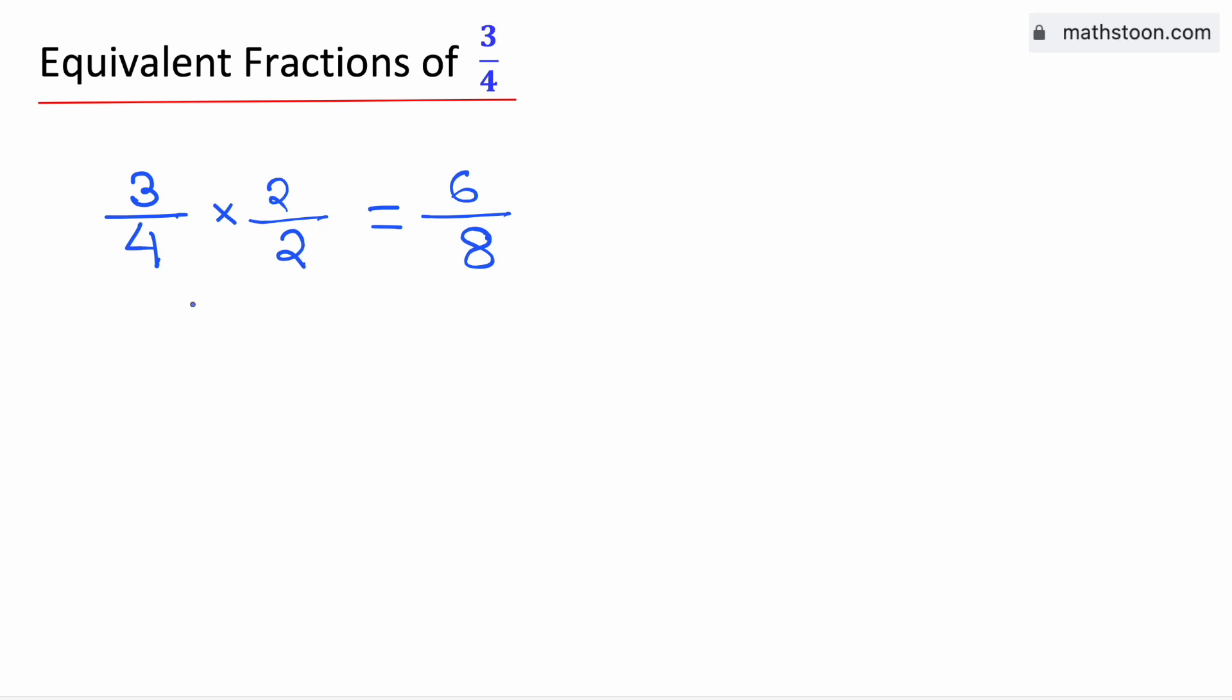To get the second equivalent fraction of 3 fourth, we will multiply both the numerator and the denominator by 3. By doing so, we have 3 times 3 in the numerator, which is 9, and 4 times 3 in the denominator, which is 12.